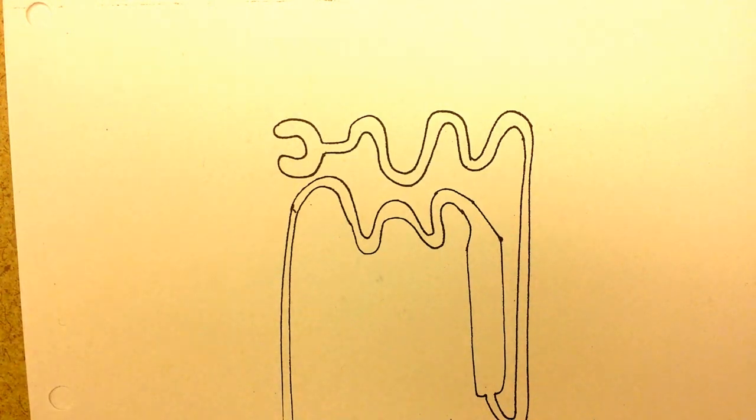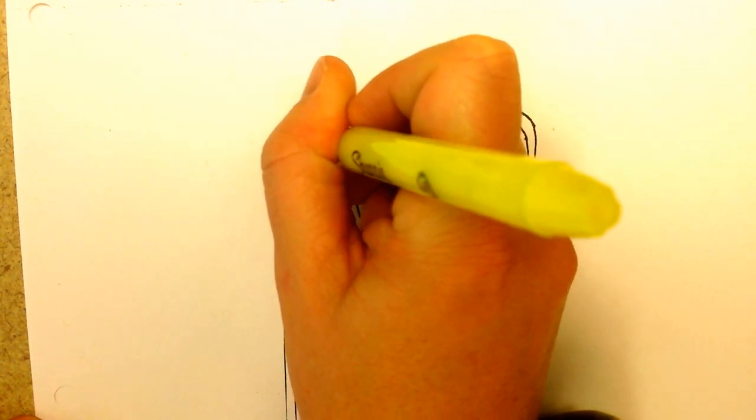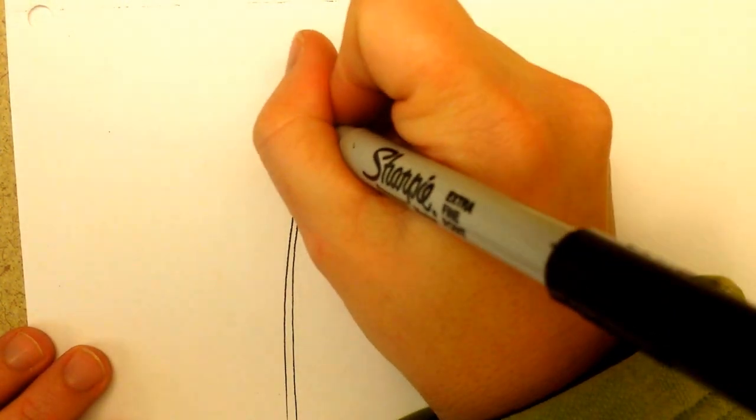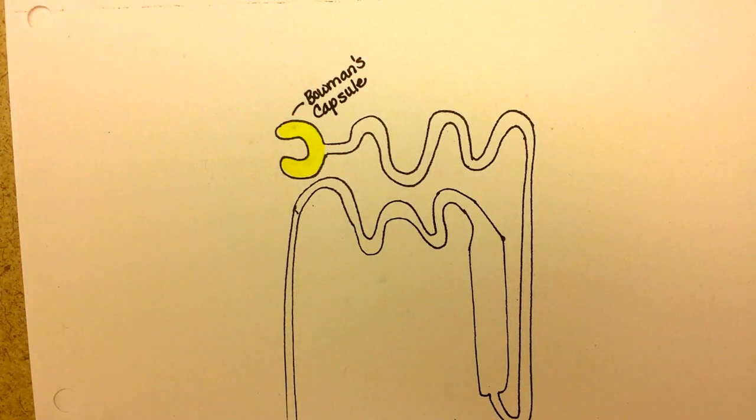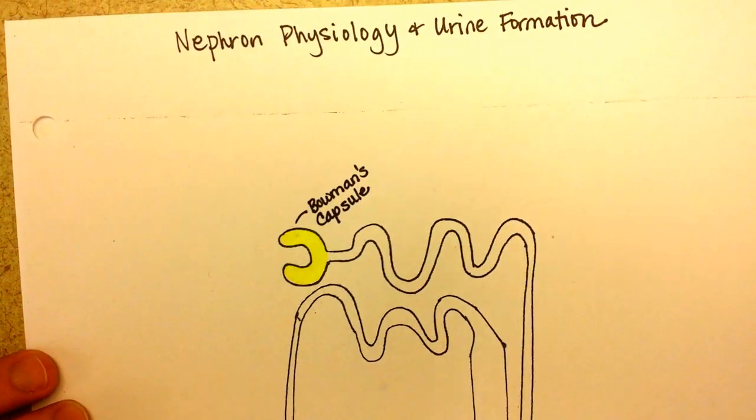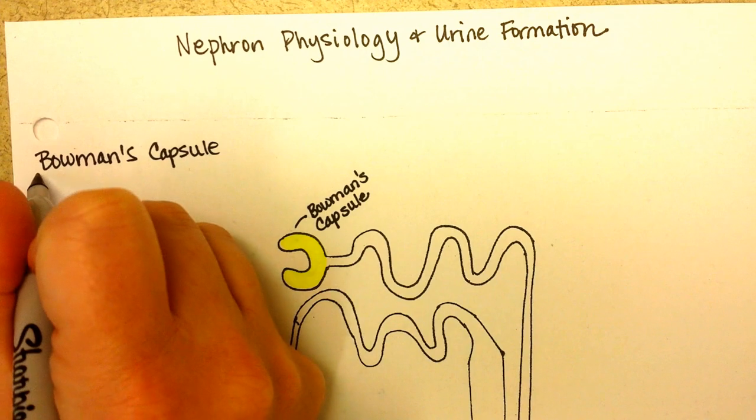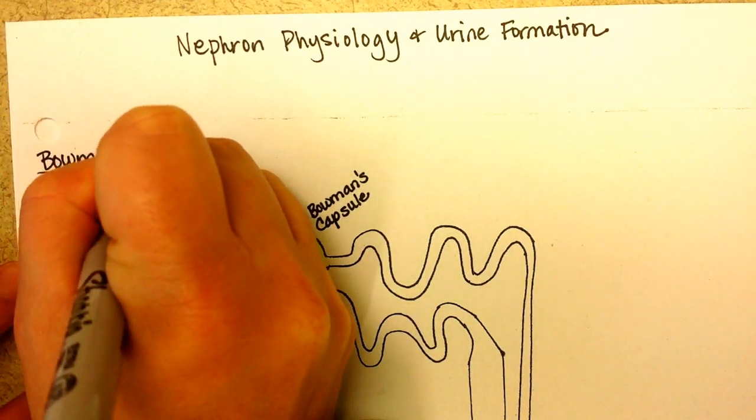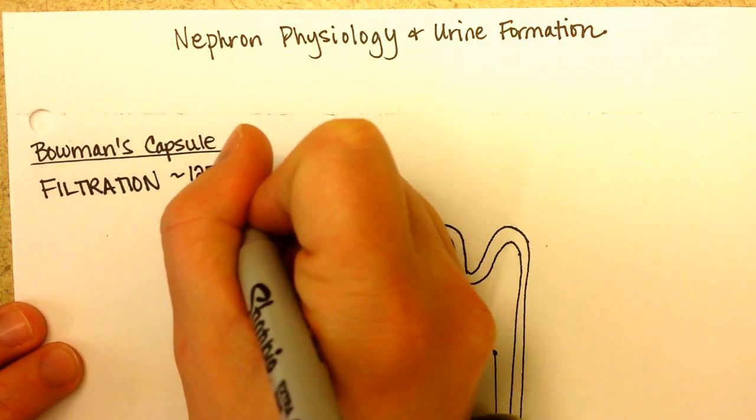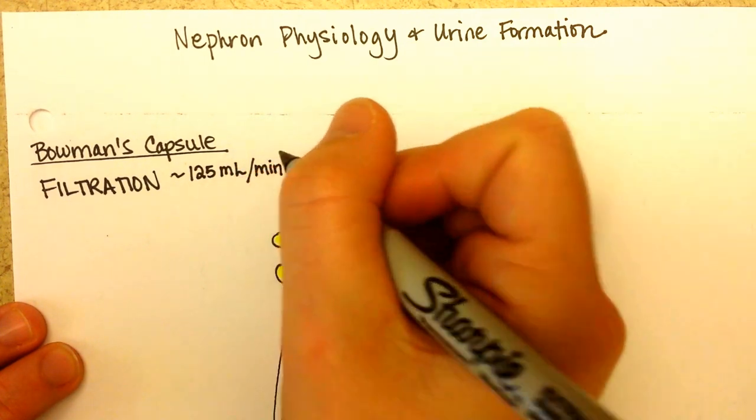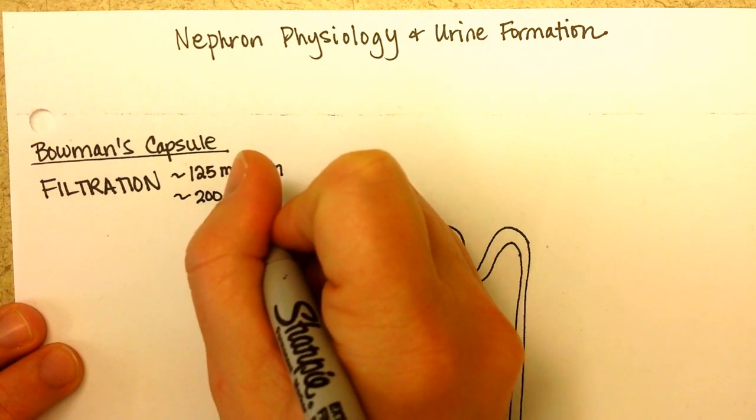Alright, so first of all, Bowman's capsule. We'll do that with a yellow highlighter. It was named after one of the early anatomists that described the structure. And Bowman's capsule is where filtration occurs. So we can put that over here. This is the site of filtration. So it's filtering blood all the time. And brace yourself because these are some giant numbers. Look at this. About 125 mls per minute is filtered by all the nephrons in your kidney every minute. And that comes to, if you look at the course of 24 hours, about 200 liters a day.